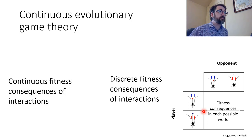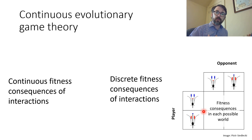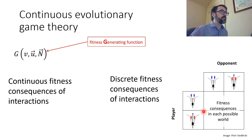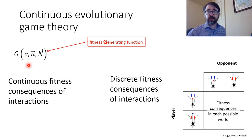In continuous evolutionary game theory, you just have continuous consequences, so the relationship between traits and fitness becomes continuous. There are a couple of different ways to do that. One way is adaptive dynamics — a more European tradition. The other way is Darwinian dynamics, which is the kind I generally use, developed by Tom Vinson and Joel Brown. For that, we use something called the fitness generating function.